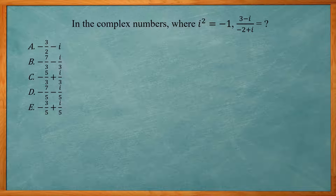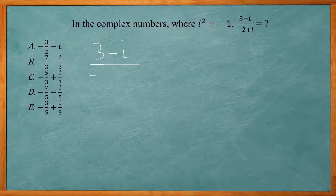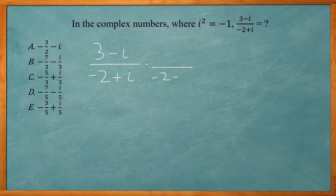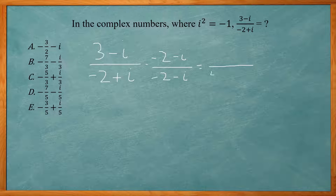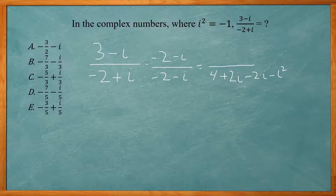This problem reads: in the complex numbers where i squared is negative 1, what is 3 minus i divided by negative 2 plus i? We don't want any complex numbers in the denominator of a fraction, so we multiply by the conjugate of the denominator. The conjugate of negative 2 plus i is negative 2 minus i — just change the sign in the middle. Whatever we multiply on the bottom we also multiply on the top. On the bottom using FOIL: negative 2 times negative 2 is positive 4, negative 2 times negative i is positive 2i, i times negative 2 is negative 2i, and i times negative i is negative i squared.